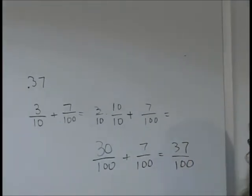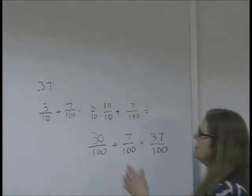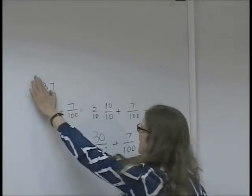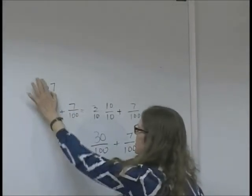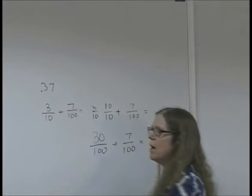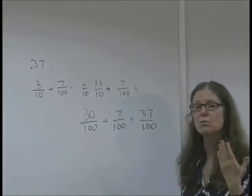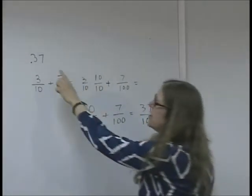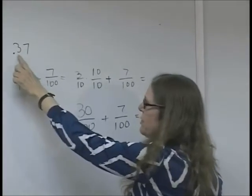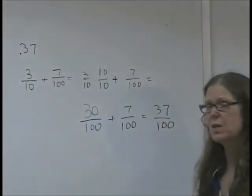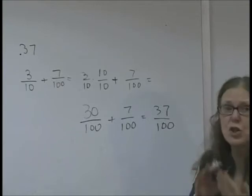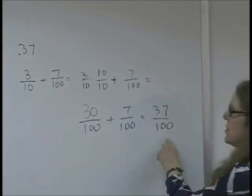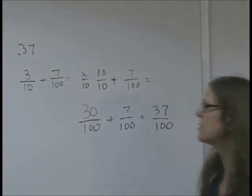Now I want you to notice that the way it worked out is that I could have read this 37 and used the place value of the last number to the right, this is the hundredths place. I could read this as 3 tenths and 7 hundredths, but that's the same as 37 hundredths. Let's see if that always works out.